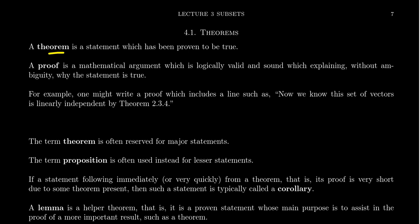A theorem is a statement which can be proven to be true. So it's a statement that's necessarily true, but it also has a proof behind it. Well, what's a proof? A proof is a mathematical argument which is logically valid and sound, which explains without any ambiguity whatsoever why the statement is true. So it's an argument that provides the truthfulness of a theorem and we know it's true. There's no doubt amongst it. That's what a proof is.